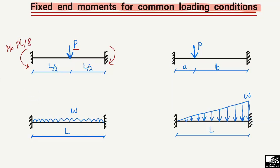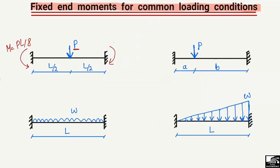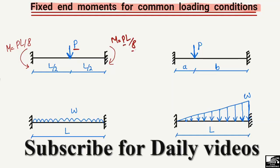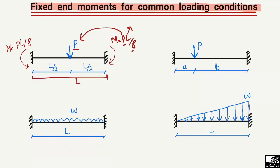Half of the moment will be transferred to this part and half to the other part. M is equal to PL/8, so both supports will take the moment. The moment can be found by PL/8, where P is the point load and L is the total length of the beam. By putting these values we can find out the moment at both support points.